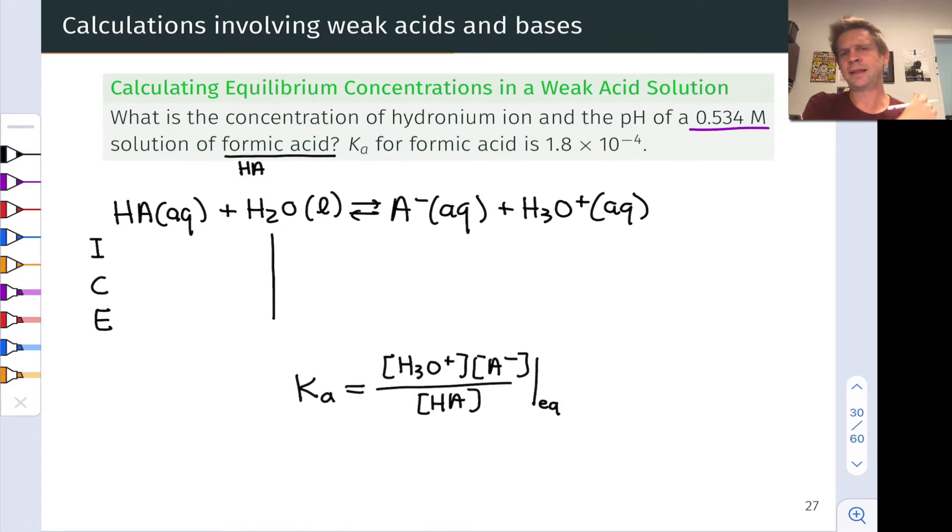Now let's think through the initial conditions. The 0.534 molar solution of formic acid tells us the initial concentration of formic acid is 0.534 molar. We haven't turned on the reaction with water yet, so all the HA molecules are intact. That means we have 0 A minus in solution initially and we'll assume 0 initial hydronium.